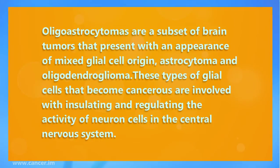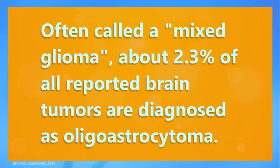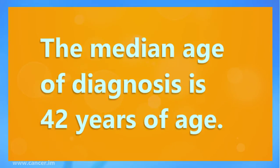Oligoastrocytomas are a subset of brain tumors that present with an appearance of mixed glial cell origin — astrocytoma and oligodendroglioma. These types of glial cells that become cancerous are involved with insulating and regulating the activity of neuron cells in the central nervous system. Often called a mixed glial, about 2.3% of all reported brain tumors are diagnosed as oligoastrocytoma. The median age of diagnosis is 42 years of age.